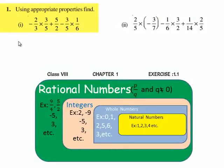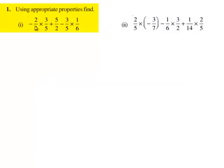Now, let us move on to the first exercise. The first problem is, using appropriate properties, find minus 2 by 3 times 3 by 5 plus 5 by 2 minus 3 by 5 times 1 by 6. Now,